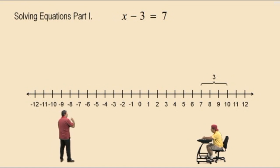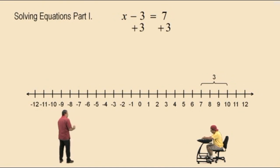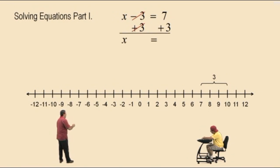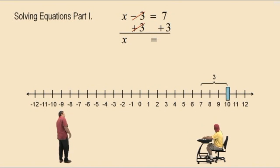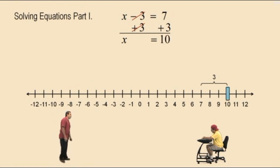Okay, Charlie, what do we do first here to get the variable isolated? Add 3 to both sides. Add 3 to both sides, that's right. So those 3's cancel out. Left-hand side, we're left with x. Now the right-hand side, Charlie, we do 7 plus 3, which is what? Ten! Ten, that's right. It's exactly what you said before, right? So our answer is x equals 10.